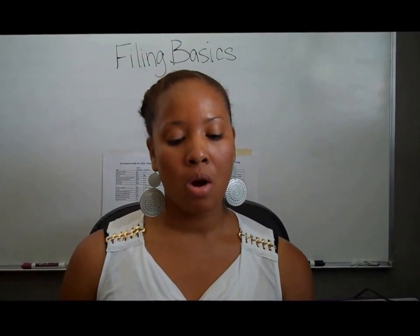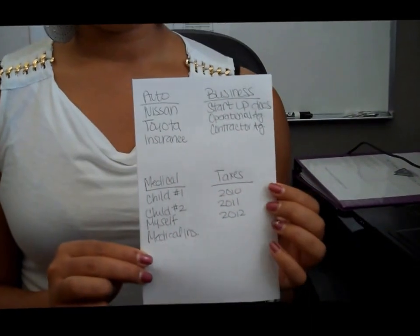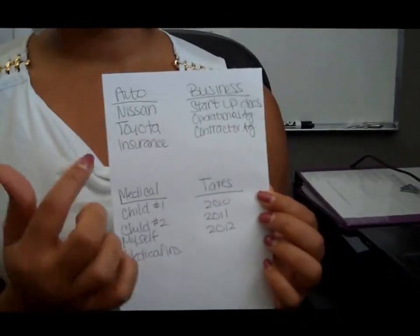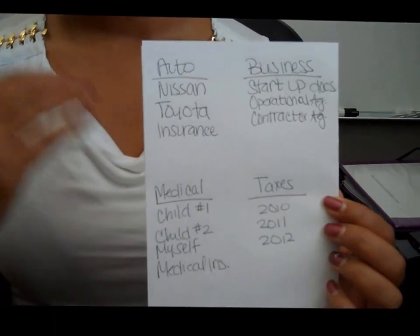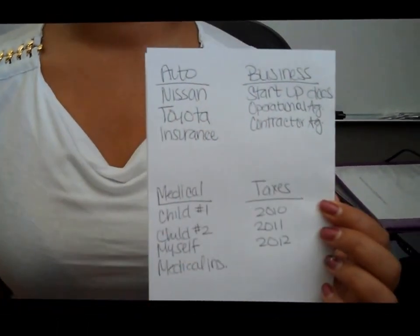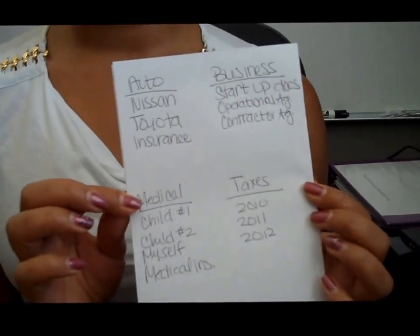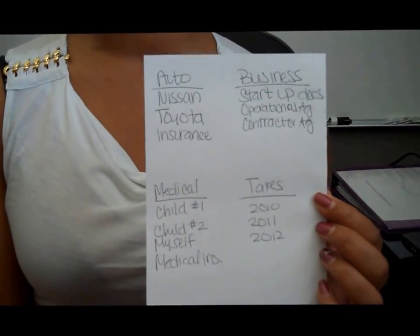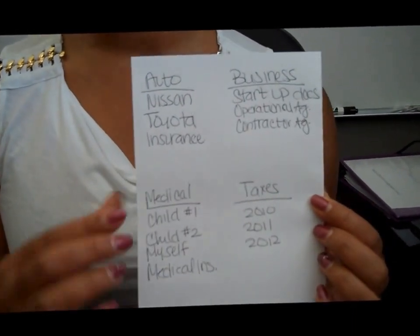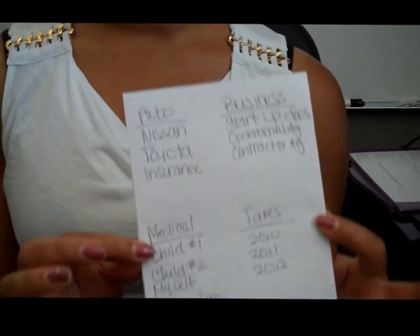So when you're mapping out your system, you can literally take it to pen and paper. Go ahead and start writing out your headers that make sense to you, and then write subcategories underneath each of those. This is just an example of mixing some personal and some business together, which happens often in a small business or home office. From there, you want to go ahead and begin creating your labels.